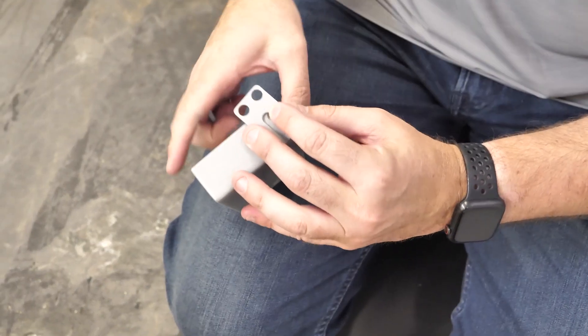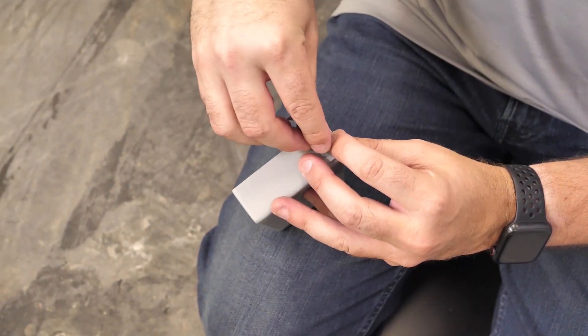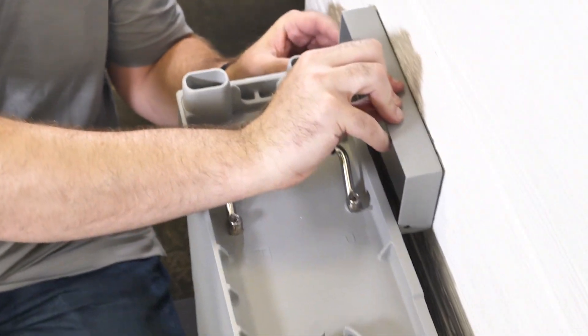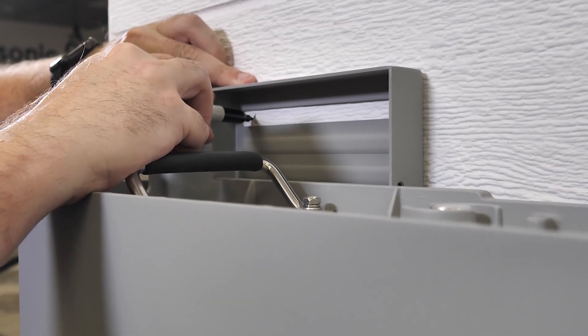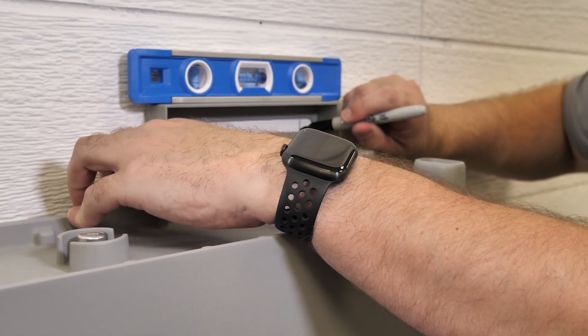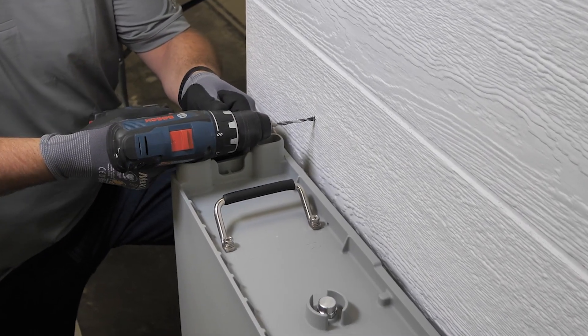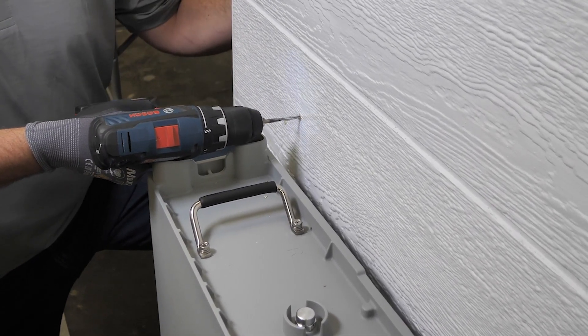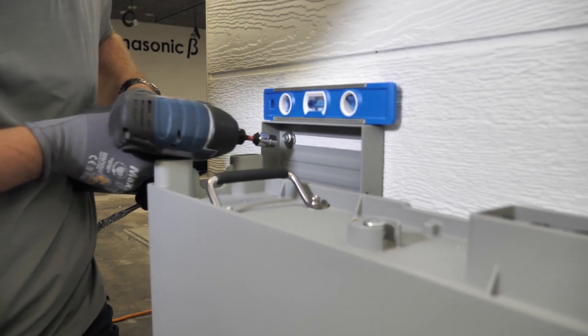Loosely attach the fasteners to the mounting bracket and place the bracket against the wall. Mark your hole and go ahead and drill. Then we can secure our mounting brackets with lag bolts.